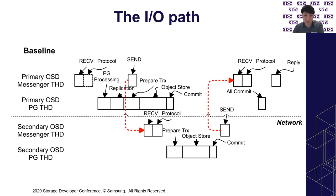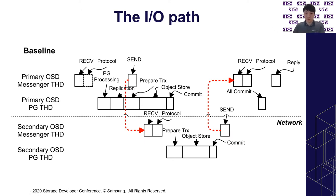After the secondary OSD completes the replication request, it sends an ACK to the primary OSD. The primary OSD ensures all IOs are finished, and if so, replies with a response message to the client. After that, the write request is complete. As you can see in the figure, there are multiple context-switch overheads to process a single write request.